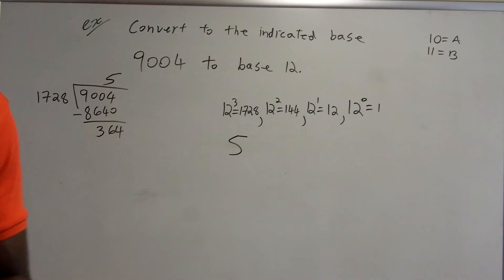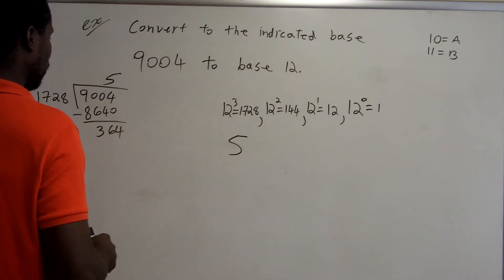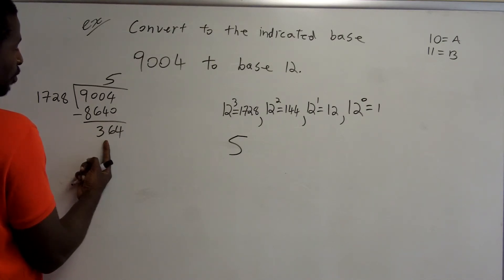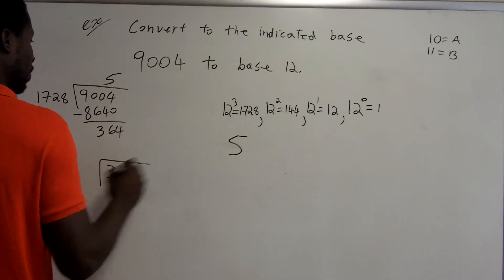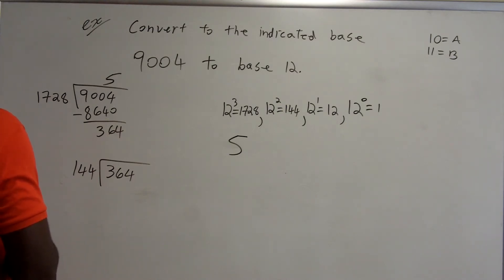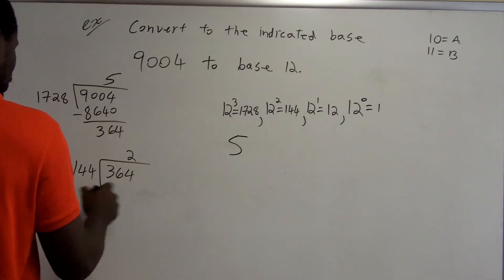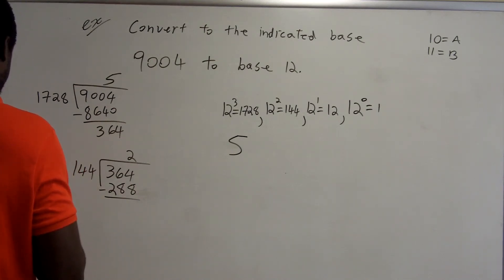So now I'm going to move down to the next place value. In the next place value, we have the 144th place. Well, in the 144th place, I need to know how many groups of 144 there are in 364. So we take 364, and we divide it by 144. That gives us 2. And 2 times 144 is 288. And then we subtract. 364 minus 288 is 76.